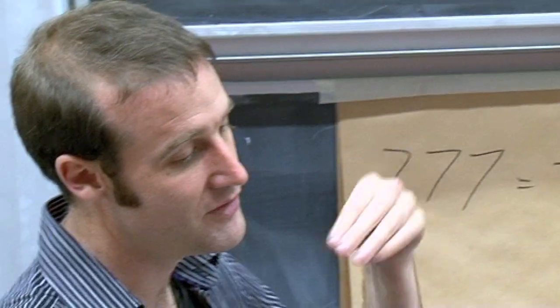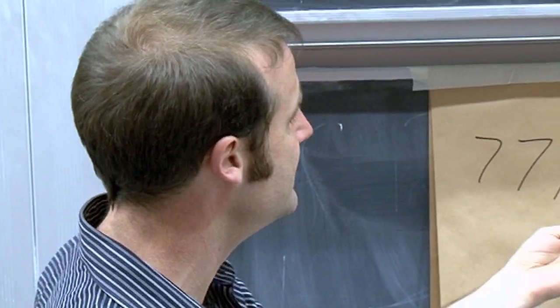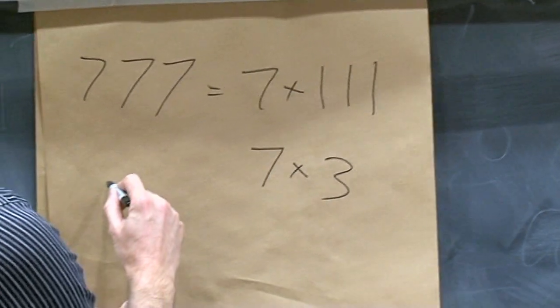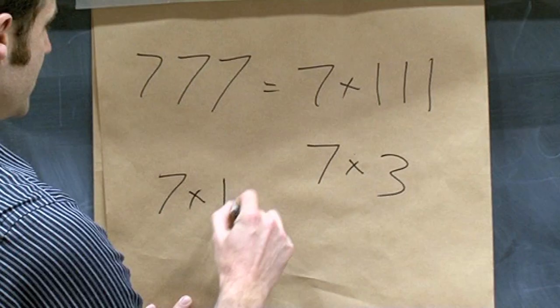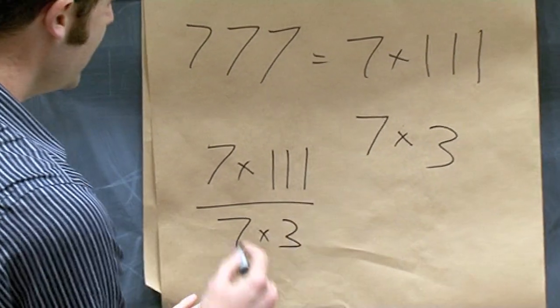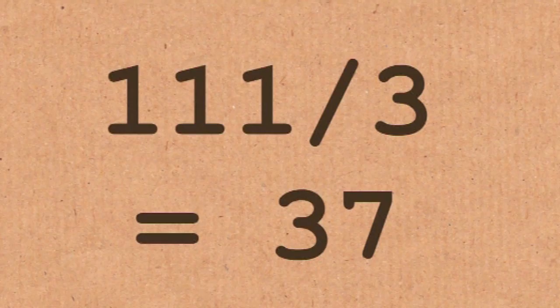So in fact, that bit there where I divided, in your case, 666 divided by 18, or here I'll divide 777 by 21, what I've actually got is 7 times 111 over 7 times 3, and these cancel out, and you're left with 111 divided by 3, which is 37.